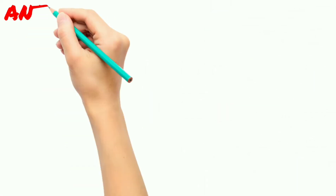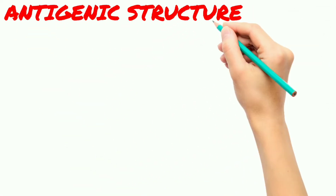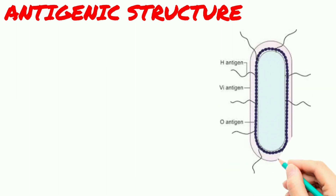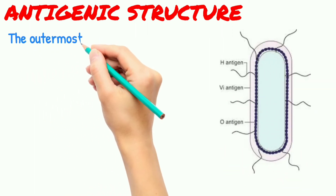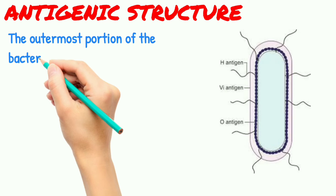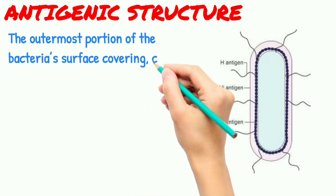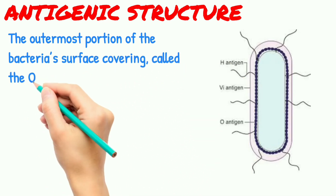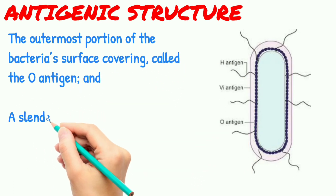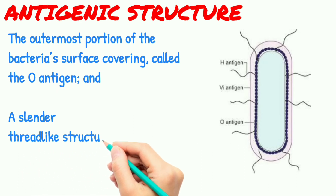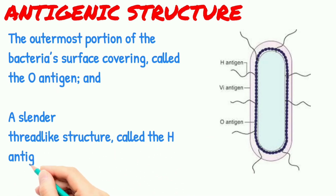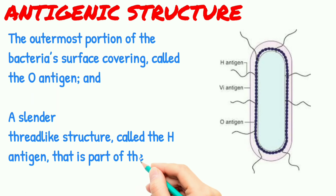Now let's see the antigenic structure of Salmonella typhi. The outermost portion of the bacterial surface covering is called the O antigen, and a slender thread-like structure called the H antigen, which is part of the flagella.